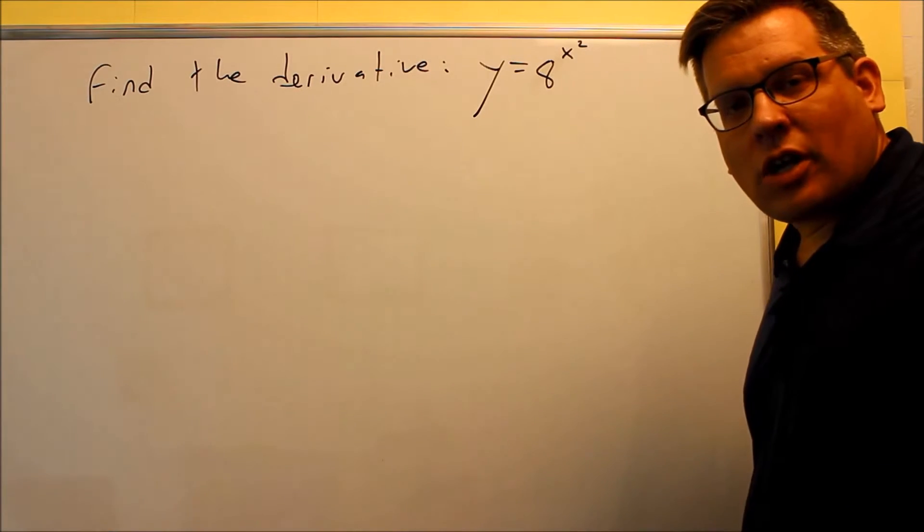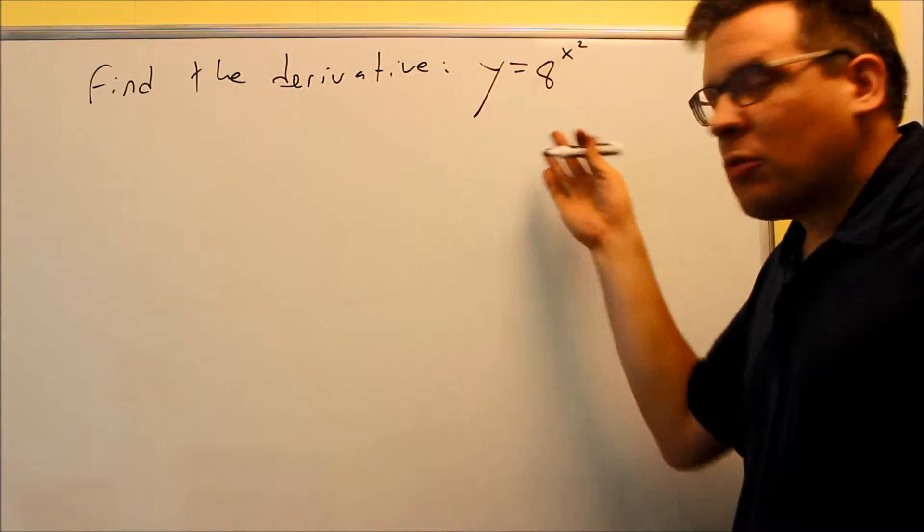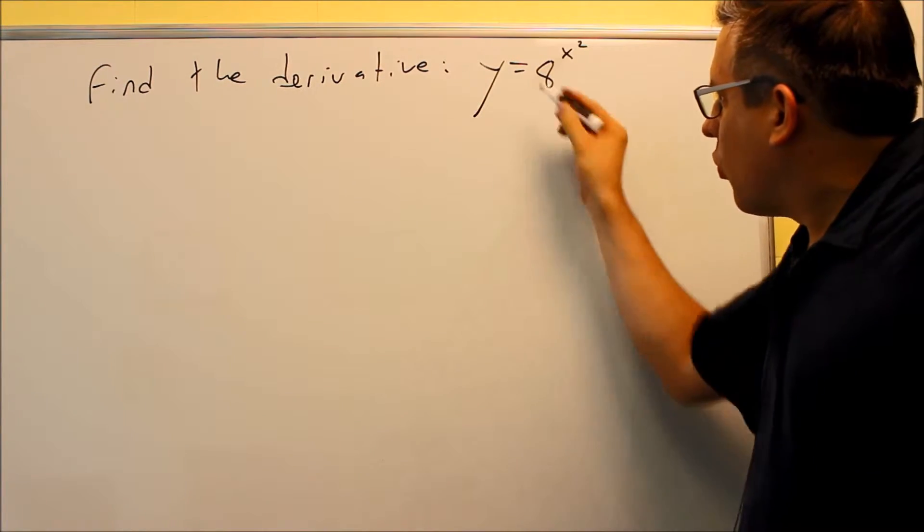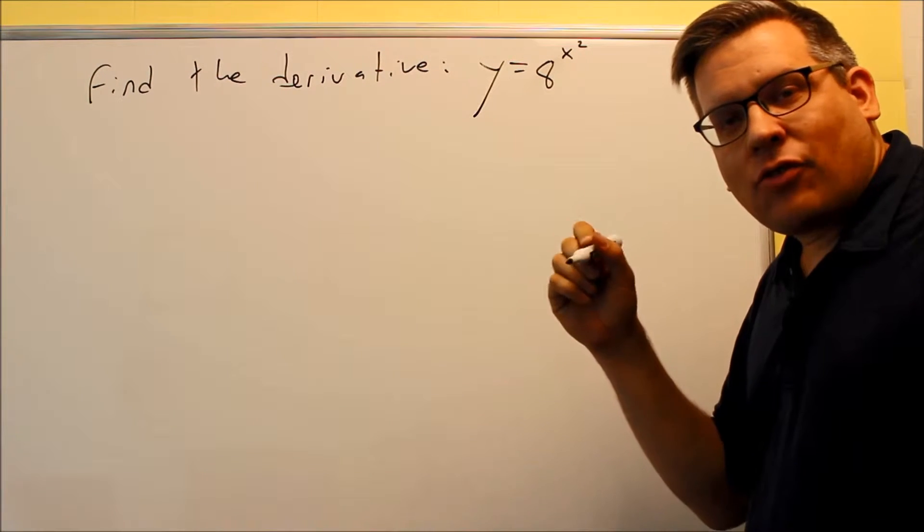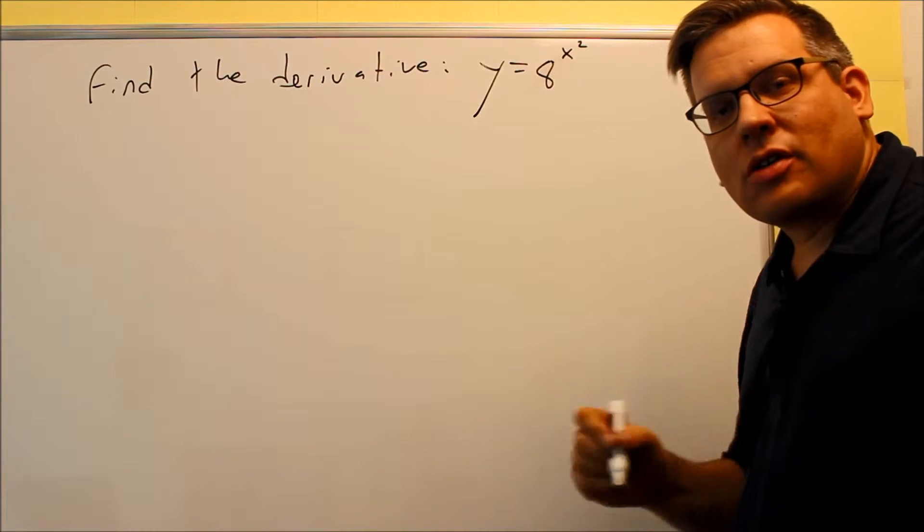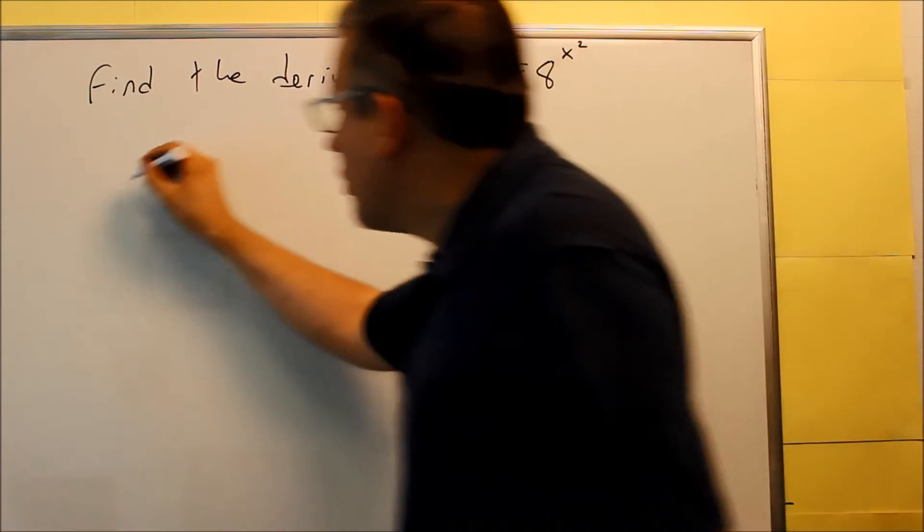Okay, so now that we've taken a look at the derivative of a to the u, we'll do a couple of examples here. So the first one we'll do, y equals 8 to the x squared. So the formula for a to the u, derivative of a to the u, is a to the u times u primed times ln a. So we're going to do that.